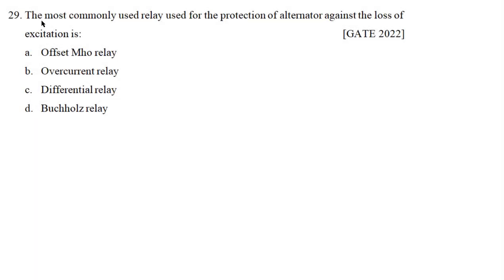Question number 29. The most commonly used relay for the protection of an alternator against loss of excitation is: offset mho relay, overcurrent relay, differential relay, or Buchholz relay. This question is from the GATE exam, year 2022.